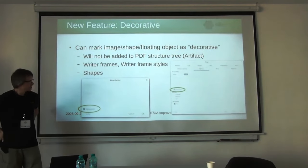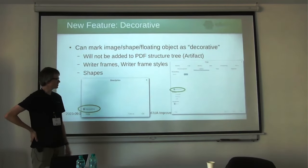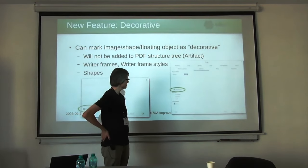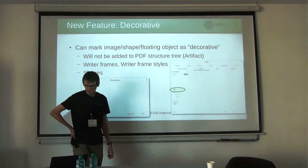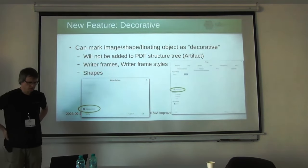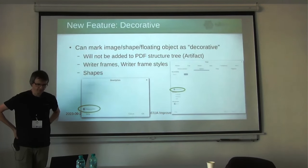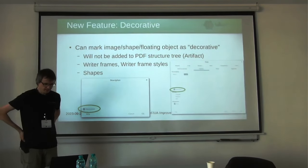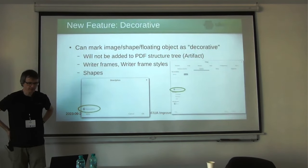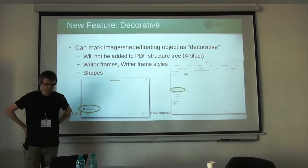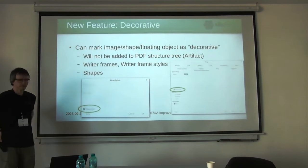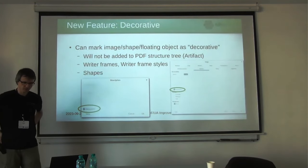If you enable the decorative checkbox, the floating objects will not appear in the PDF structure tree — they will instead be tagged as artifacts. You can see that the description and text alternative fields are disabled when the element is decorative, because those don't make sense for a purely decorative element. This feature has also been added for drawing objects and shapes, and can be set in Calc, Impress, and Draw as well.